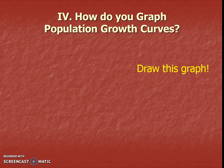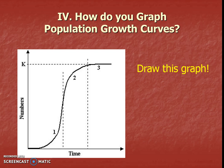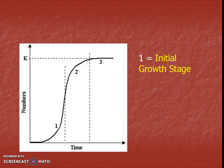So how do you graph these population growth curves? You need to draw this graph in your notes — the next couple of slides are going to include the same graph. This first part of the graph is going to be called the initial growth stage. It is when there's some slow growth occurring at the beginning, when there are plenty of resources available.